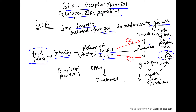Now the problem is GLP-1 and GIP are active, but these are converted into an inactivated form by an enzyme called dipeptidyl peptidase-4 (DPP-4). That is why the action of these peptides is very short — they are very short-acting peptides.